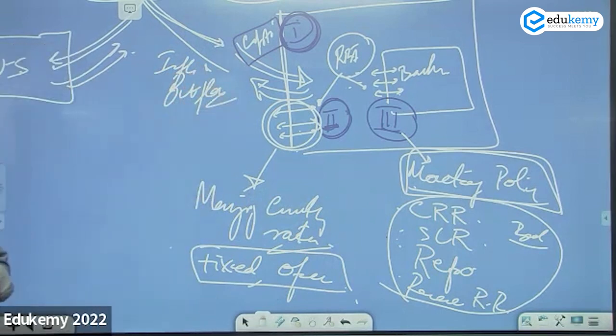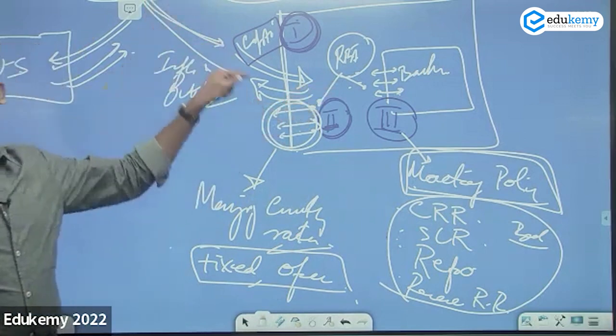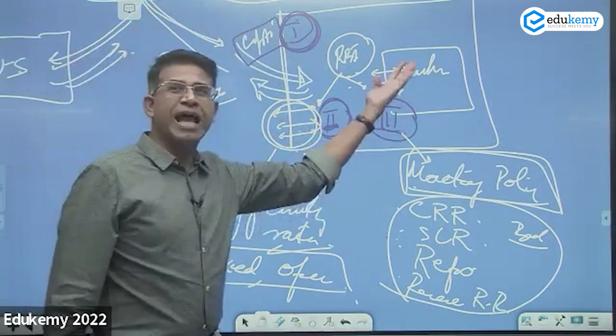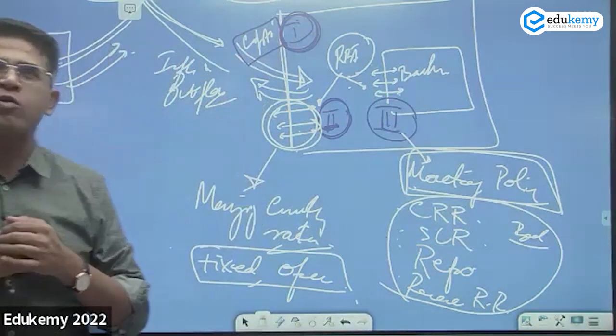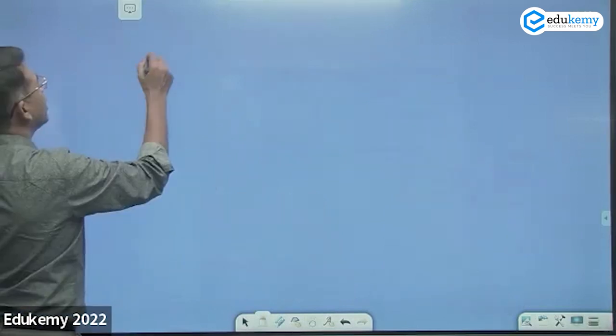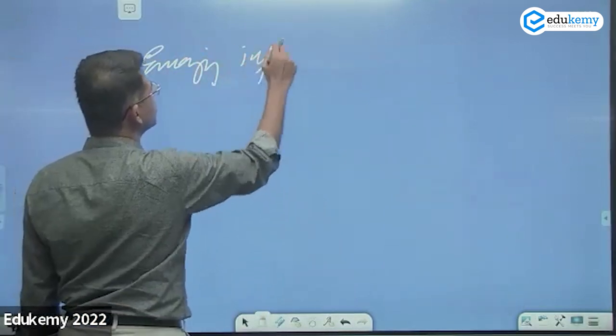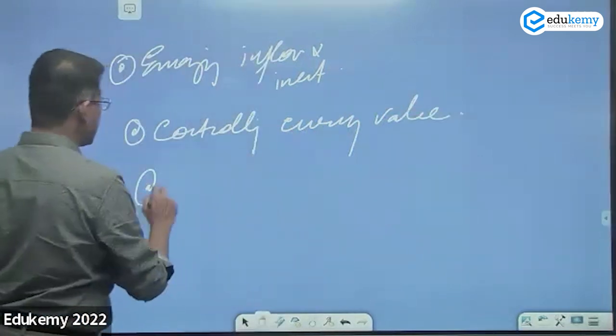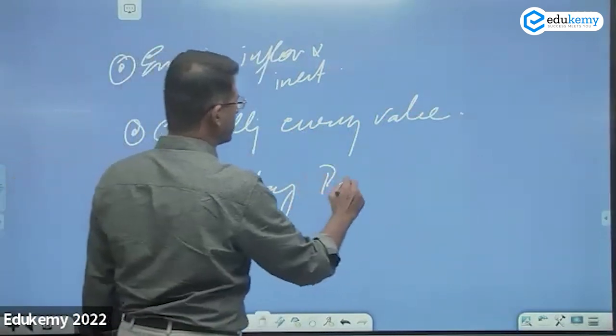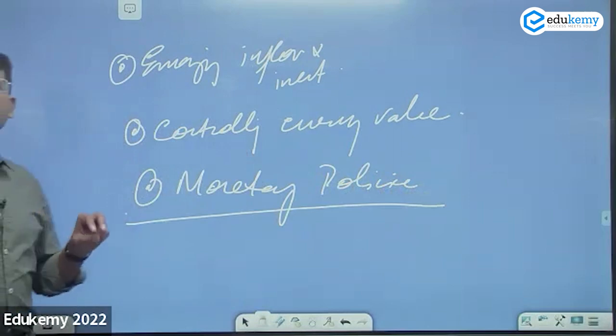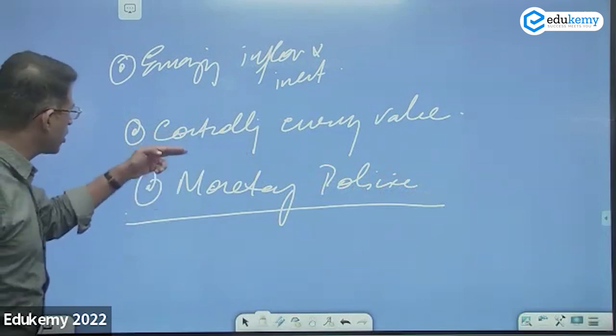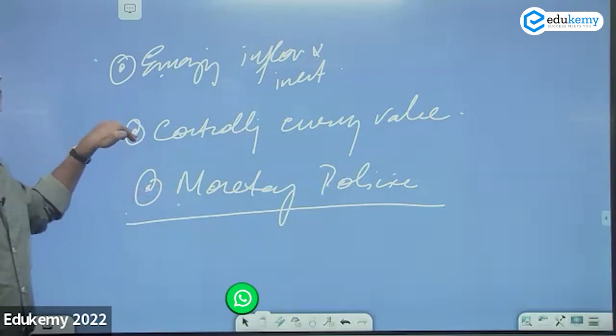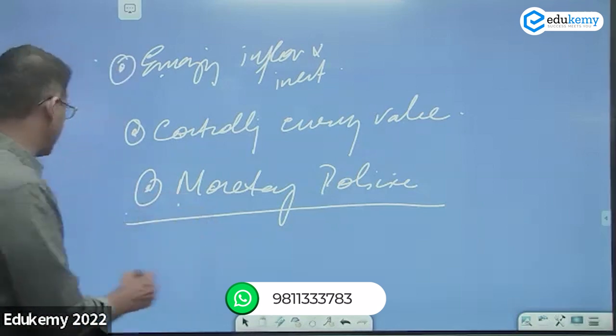The article says that these three things cannot be open at the same time. You cannot have free money here, free money here, and entirely free here - all three cannot work to your advantage completely. It's about encouraging inflows and investment, controlling currency value, and monetary policies. At any given time, the article says you can control only two of them. If you control these two, this gets impacted. If you control these two, this gets impacted.